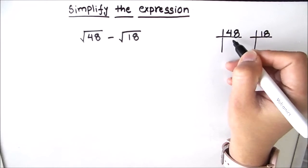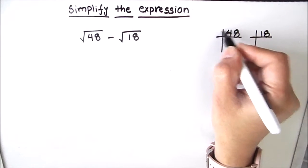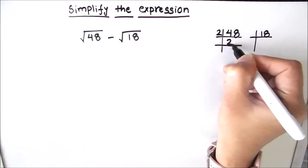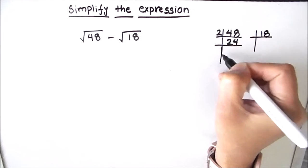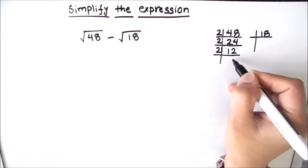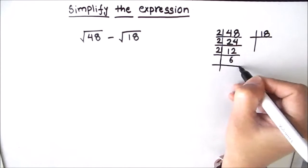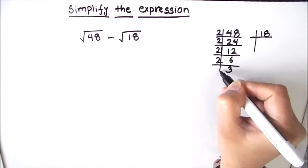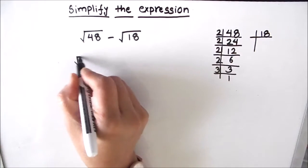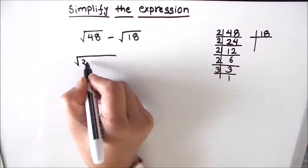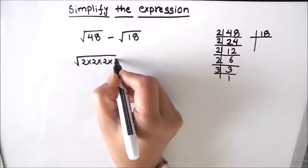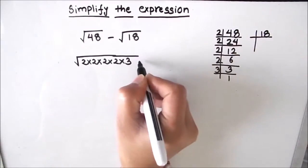First we are going to find the factors of 48. 48 is an even number, it is fully divisible by 2. 2×2=4, 2×4=8, we can divide 24 by 2, 2×12=24, 2×6=12, 2×3=6, and 3×1=3. So the factors of 48 are 2×2×2×2×3.